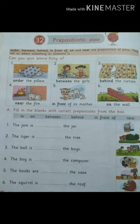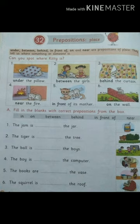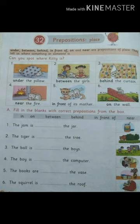Fifth sentence: the books are dash the vase. Near the vase — yes, the books are near the vase. Sixth sentence: the squirrel is dash the roof. The squirrel is on the roof. 'On' is what remains, so the sixth sentence is: the squirrel is on the roof.